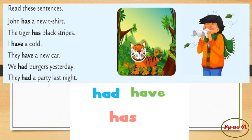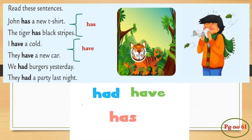Now let's find out the difference between has, have and had. Let's read these sentences first. John has a new t-shirt. The tiger has black stripes. I have a cold. They have a new car. We had burgers yesterday. They had a party last night. So here we used has, have and had. Now, look at these examples once again. Had is used in the past tense, and has and have are used in the present tense.